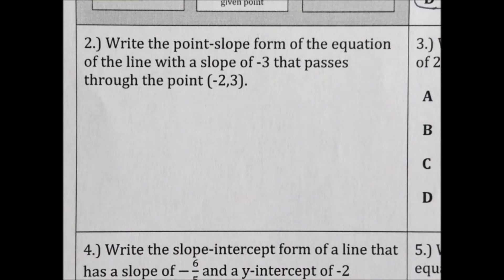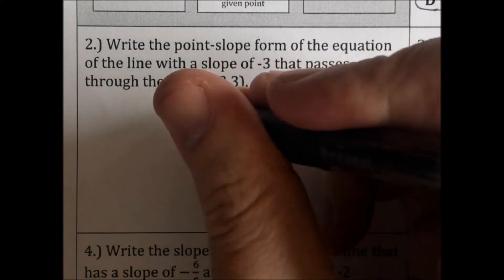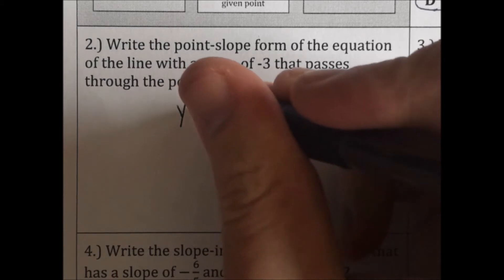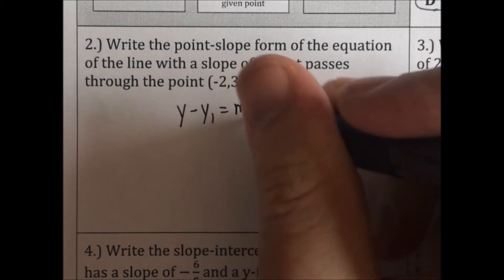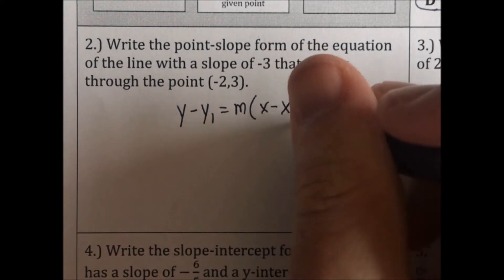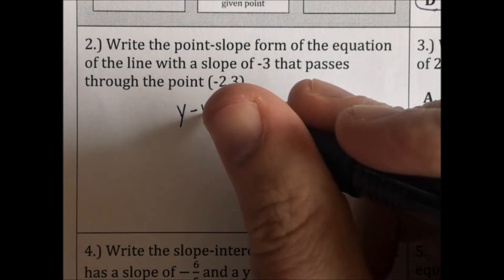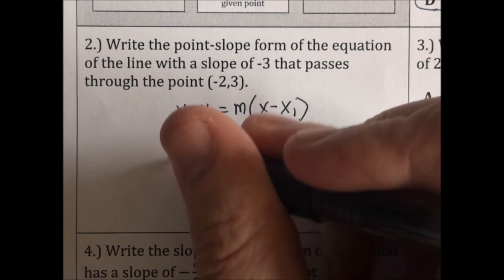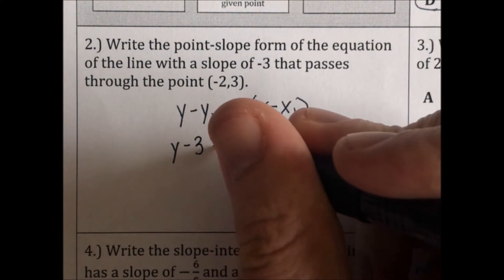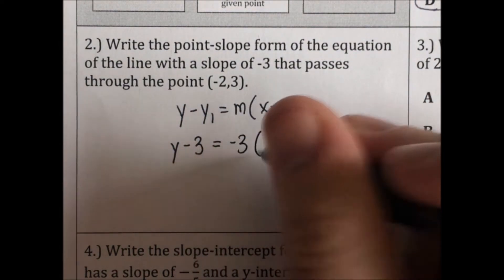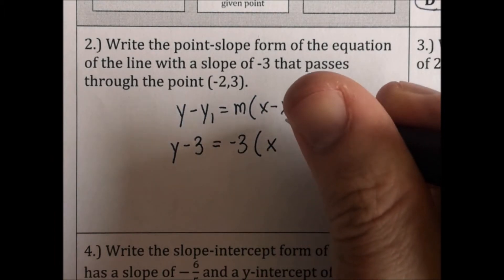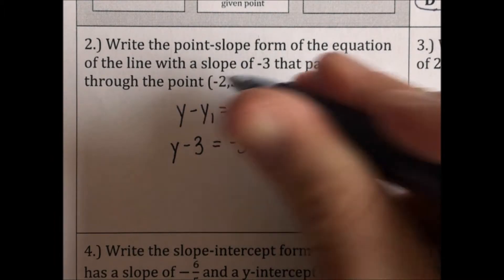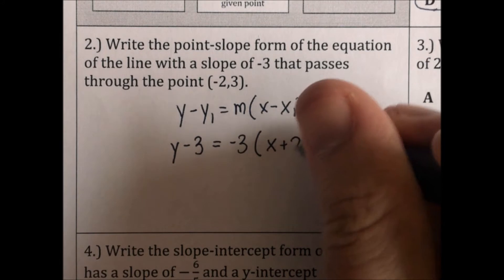Write the point-slope form of the equation of the line with a slope of negative 3 that passes through the point negative 2, 3. Point-slope form is y minus y1 equals m parentheses x minus x1. So we're going to plug in the y-coordinate, the x-coordinate, and the slope. It's going to be y minus 3 equals negative 3 parentheses x, and since it's minus and the x is also negative, it becomes plus 2.